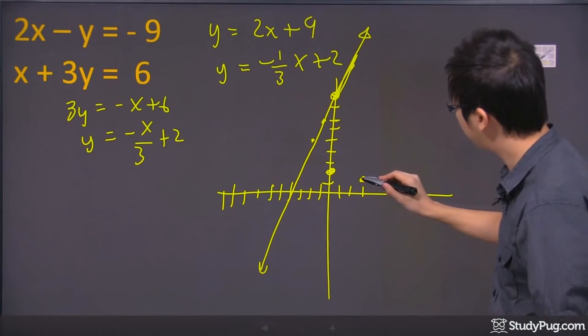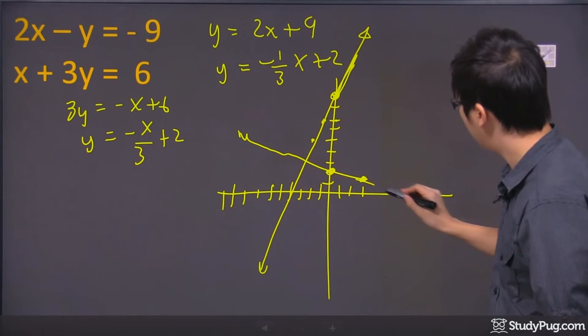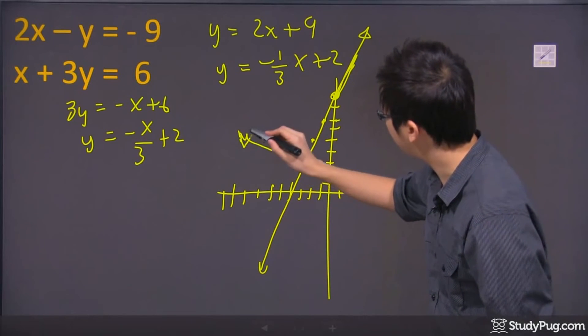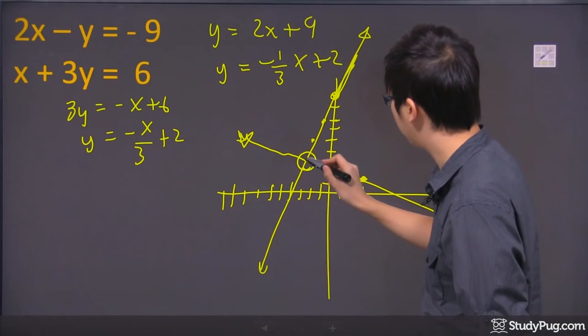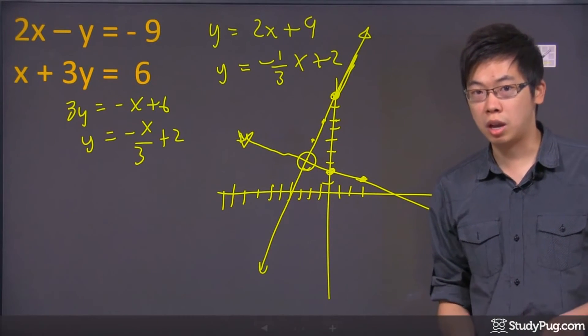Two points usually give you a good line. So I'm going to draw a line here. We've got an approximate intersection point right here.